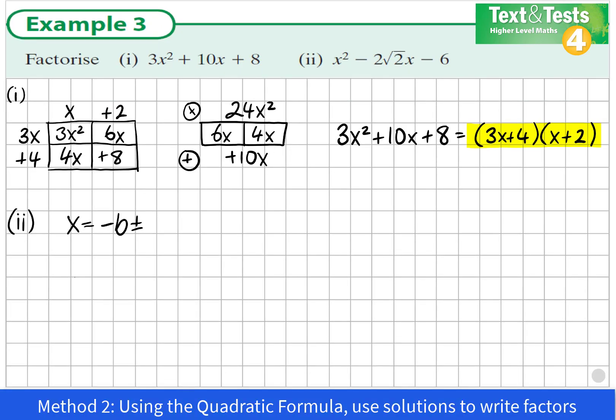So the quadratic formula says that x equals -b ± √(b² - 4ac) all divided by 2a. In our question here, a = 1, b = -2√2, and c = -6. And then you carefully substitute these values into the formula and evaluate this.